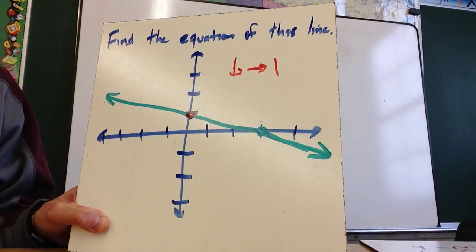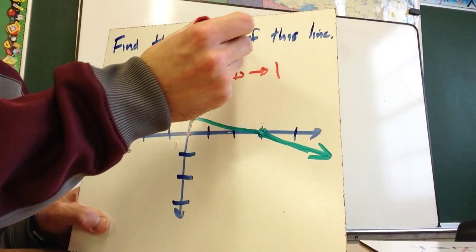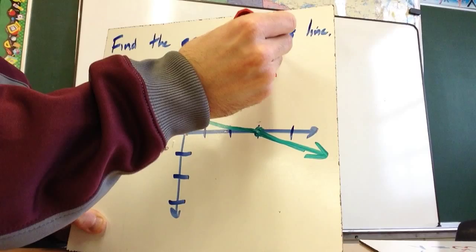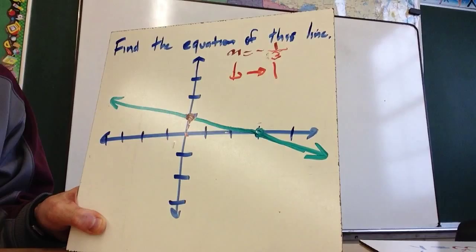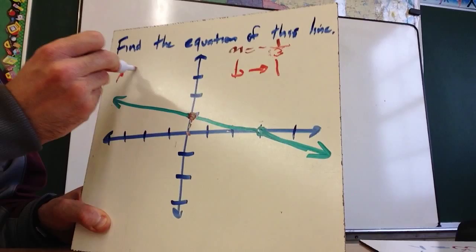And then the slope, I'm going from here, I'm going to rise negative 1 and run 1, 2, 3. So my slope, then, is negative 1 third. Sorry, it's really ugly 3. So my slope was from here, down 1 over 3. And the y-intercept is 1, so this is y equals m, negative 1 third, x plus b.